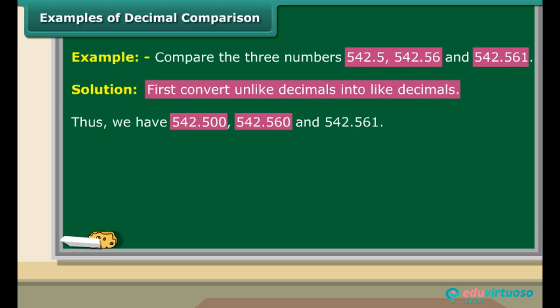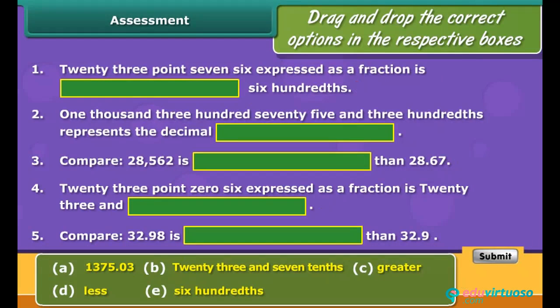Convert all unlike decimals into like decimals by adding zeros at the end. The numbers now will be 542.500, 542.560, and 542.561. Now concentrate on the decimal part alone. The first number represents 500 thousandths, second number represents 560 thousandths, and the third number represents 561 thousandths. So 542.561 is greater than 542.5 and 542.56. Similarly, 542.56 is greater than 542.5.